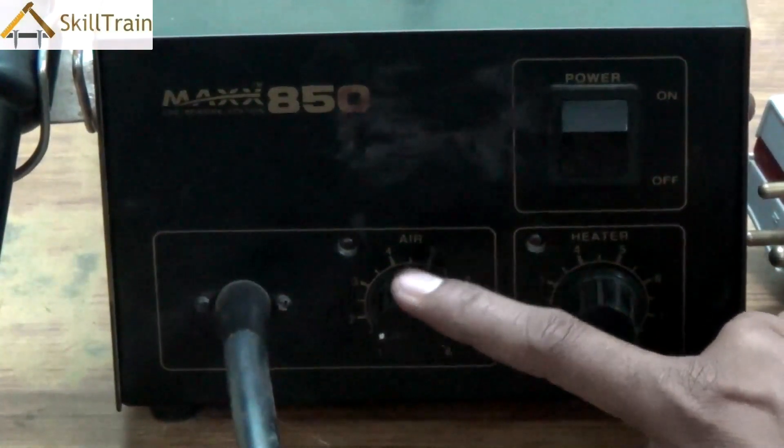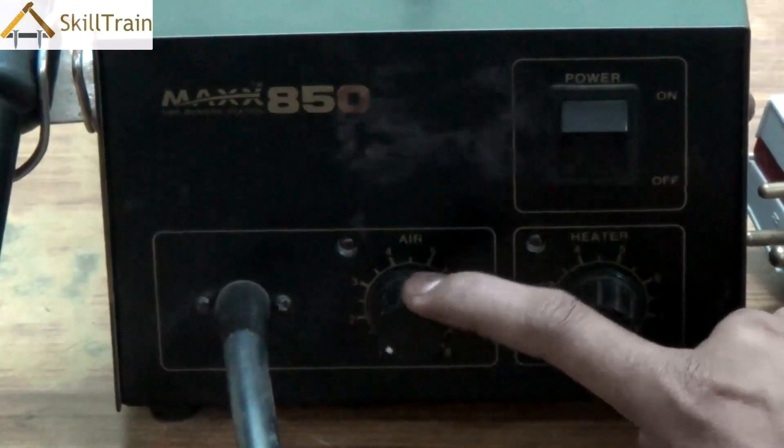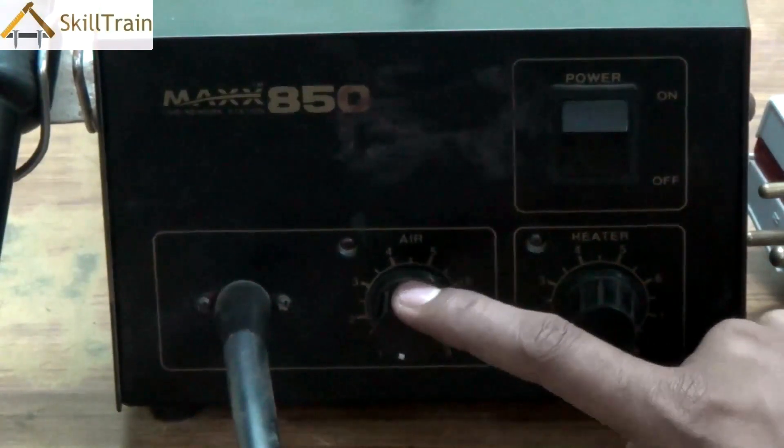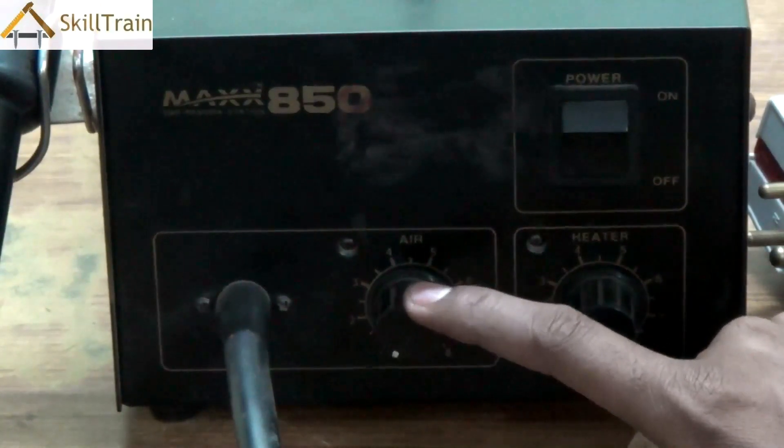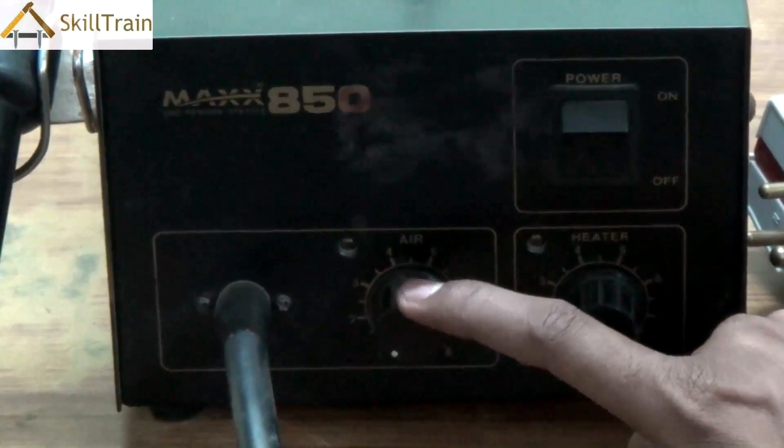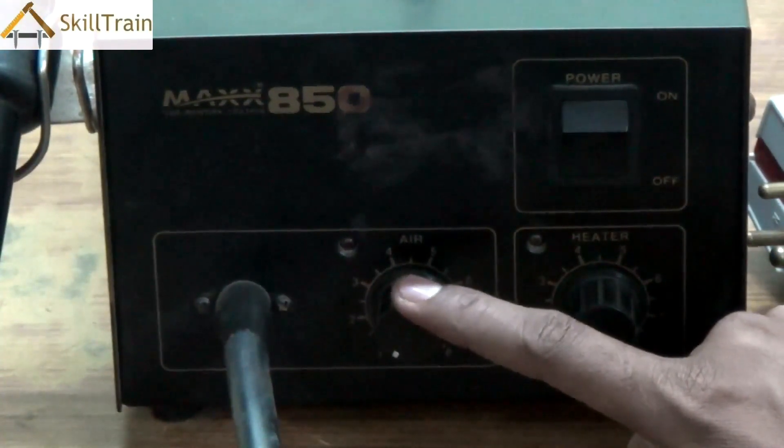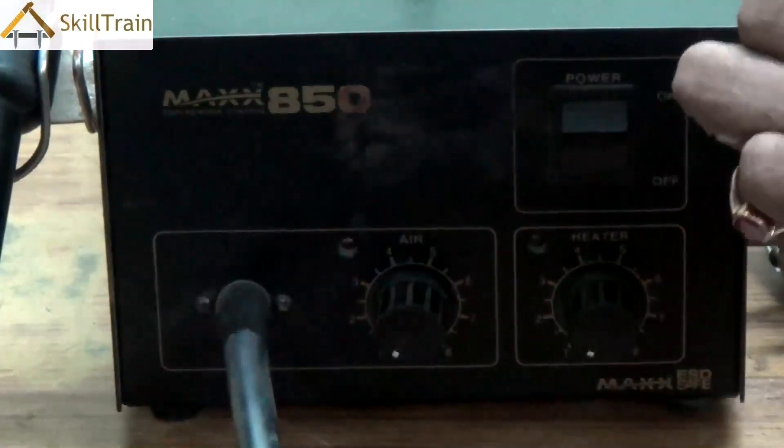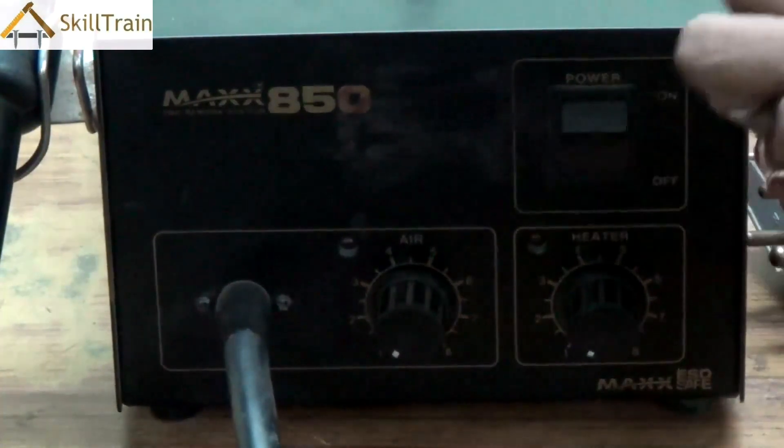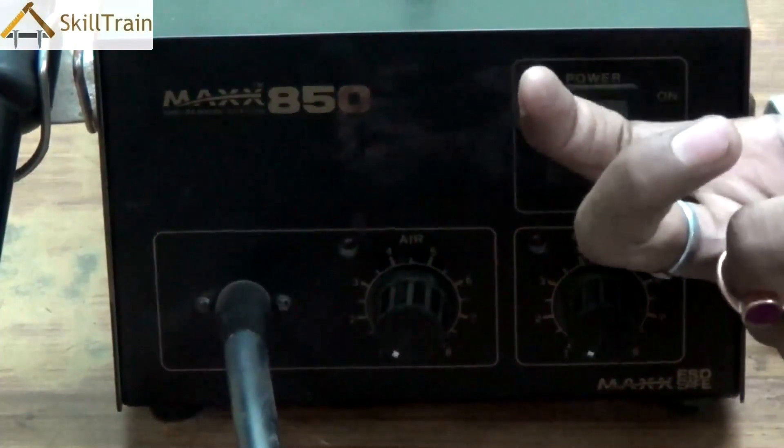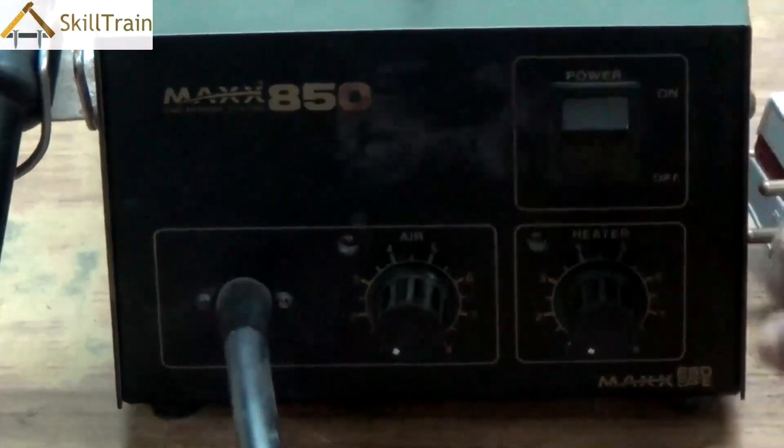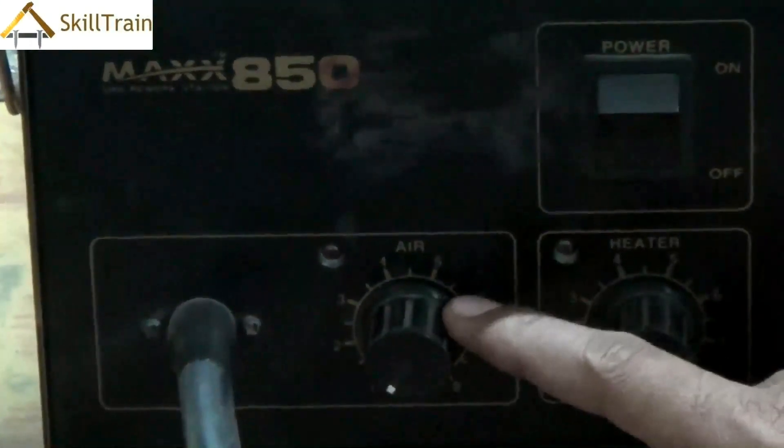So the air knob helps you control or regulate the amount of air that is released by the equipment. Now depending on the necessity we try and increase the airflow or decrease the airflow depending on what type of component we are removing or placing on a PCB. This is to be controlled and that's the reason why we have a clear regulator knob placed here.